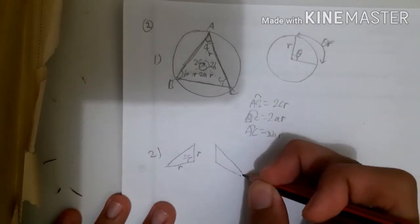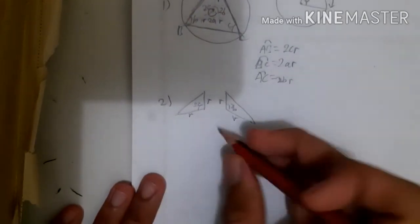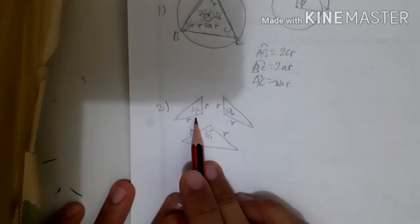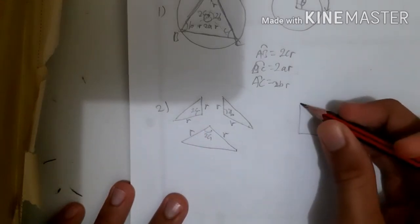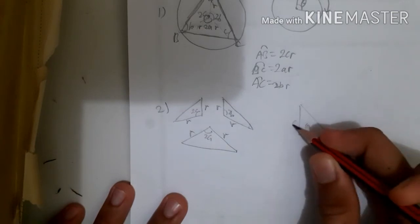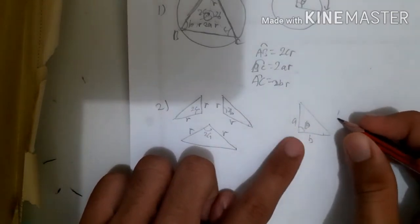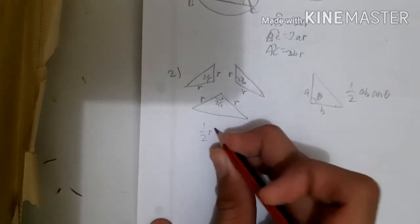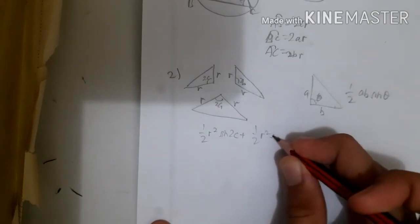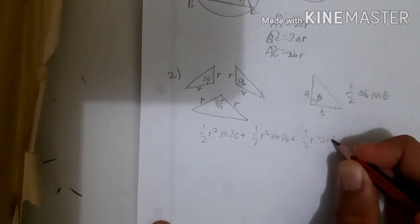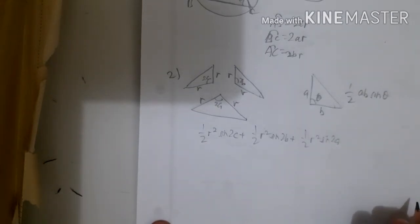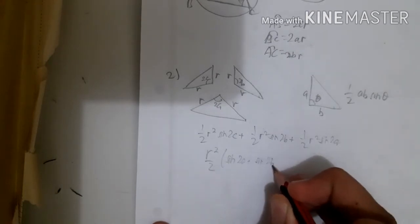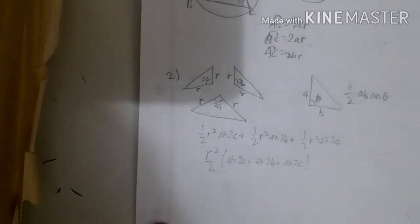The three sub-triangles have angles 2B, 2A, and 2C respectively, each with two sides of length R. Using the formula that the area of a triangle with included angle theta and two sides is ½ab·sin(theta), the total area is ½R²sin(2C) + ½R²sin(2B) + ½R²sin(2A), which factorizes to R²/2 · (sin2A + sin2B + sin2C). That's the answer for number 2.